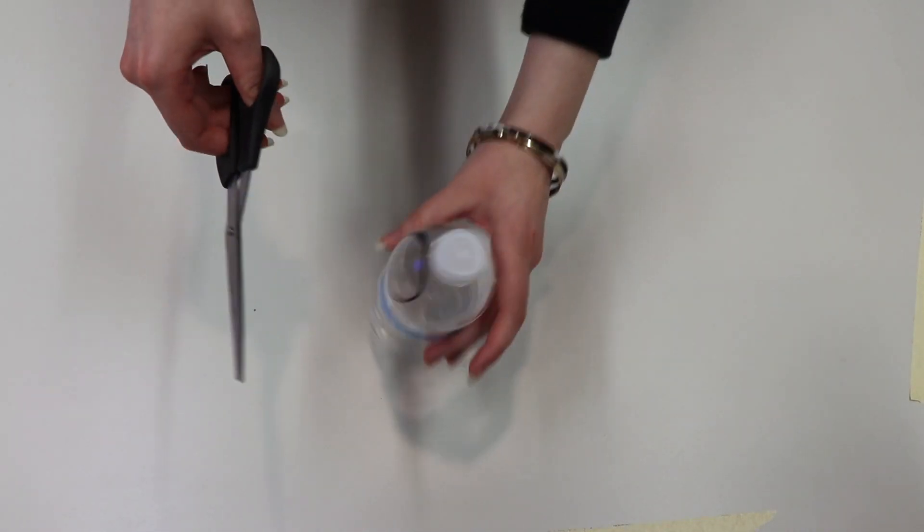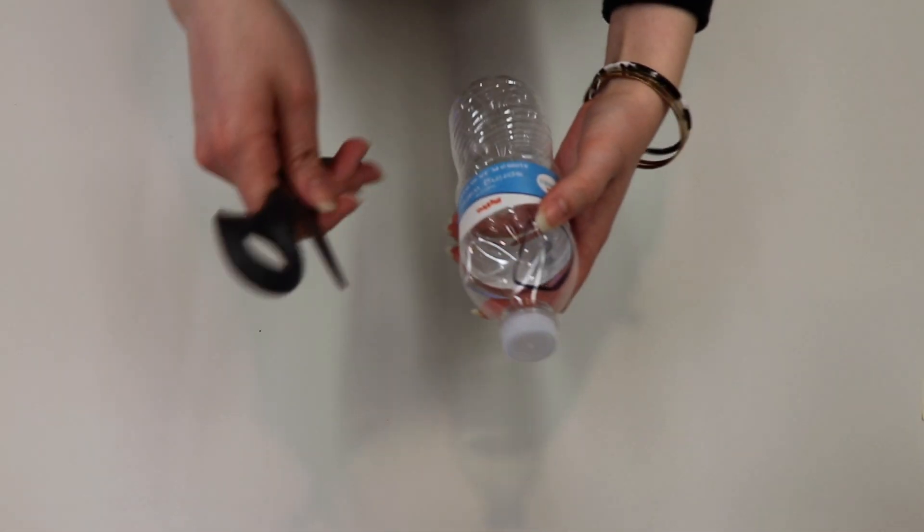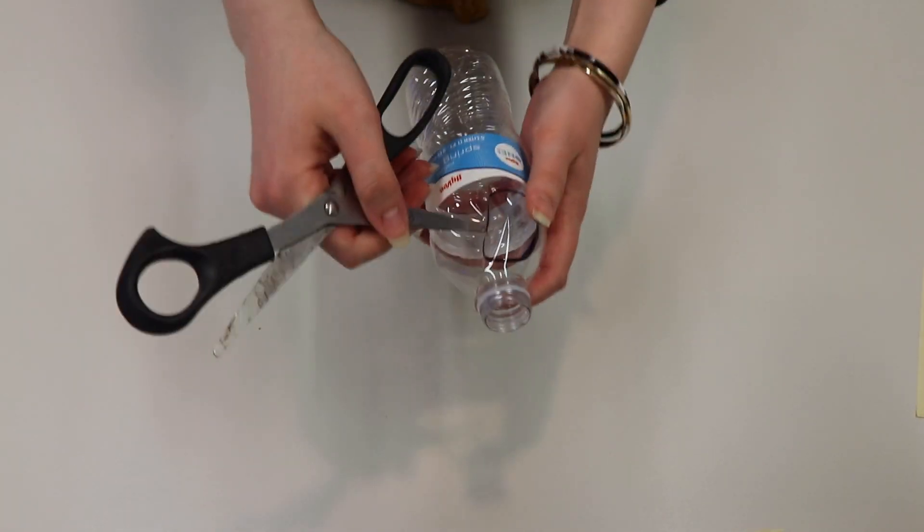Now you'll want to grab some scissors and probably an adult too to help you cut out the circle on the water bottle. You might have to poke a little hole in the circle to get it started.